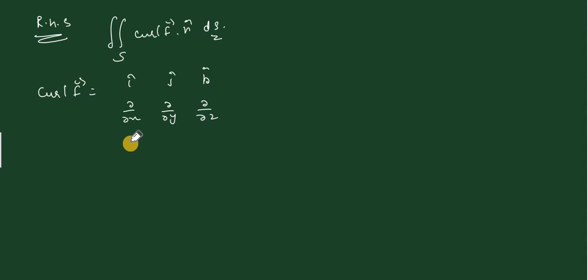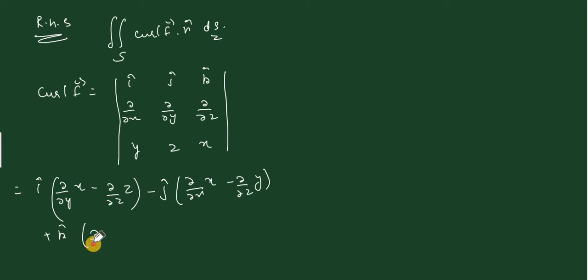Computing the curl: i cap times (del z by del y minus del y by del z) gives minus i cap, plus j cap times (del x by del z minus del z by del x) gives minus j cap, plus k cap times (del y by del x minus del x by del y) gives minus k cap.